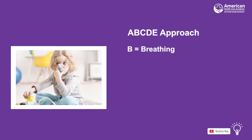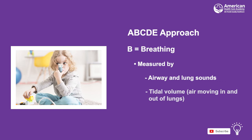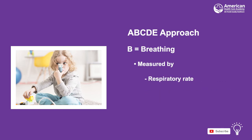B is for breathing and is measured by airway and lung sounds, tidal volume or the amount of air moving in and out of the lungs, respiratory rate, respiratory effort, and pulse oximetry.